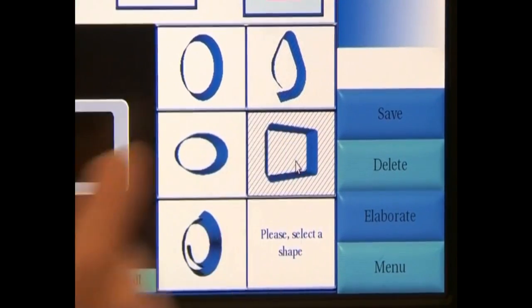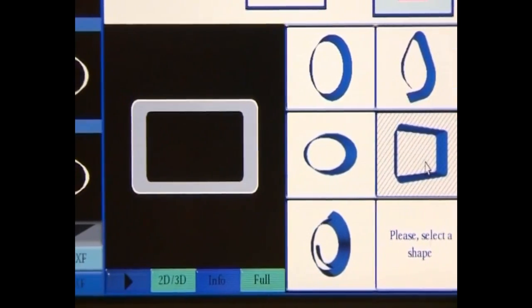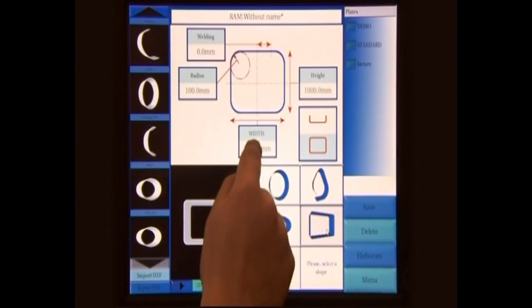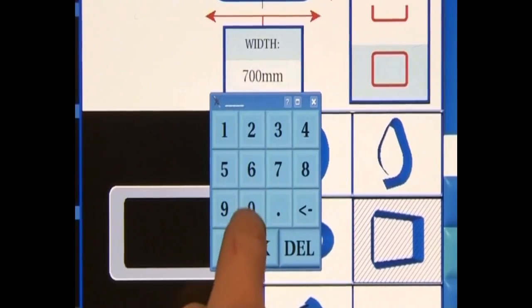Let's select the rectangular tank. We enter the dimensions of the tank: width, joint radius, and height.